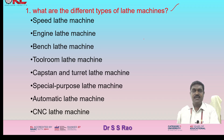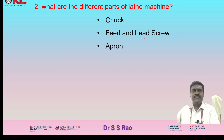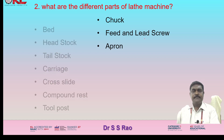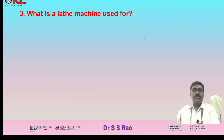Automatic lathe machine and CNC lathe machines. What are the different parts of a lathe machine? The different parts of the lathe machine are: bed, headstock, tailstock, carriage, cross slide, compound rest, tool post, chuck, feed, lead screw, and apron. What is a lathe machine used for?